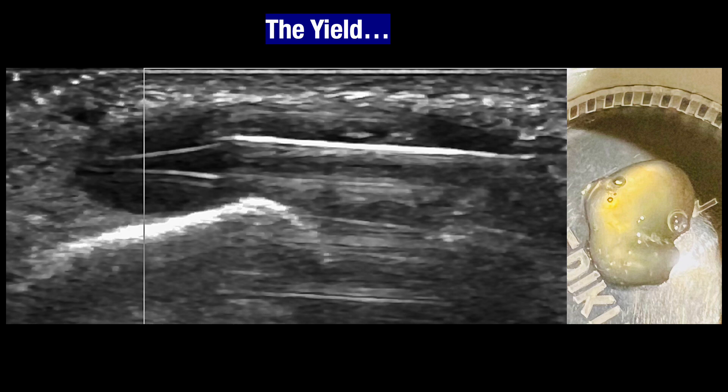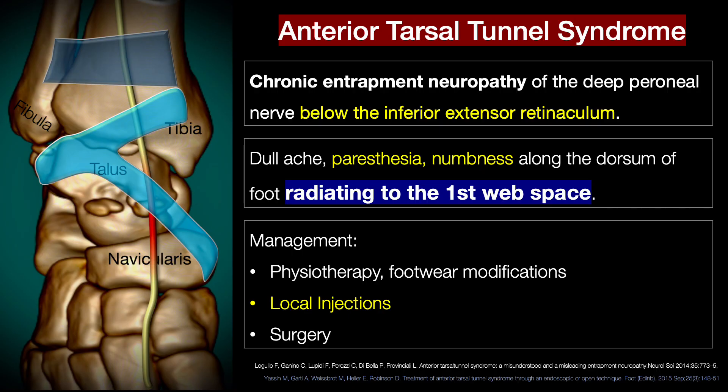At the end of the procedure, we aspirated around 0.6 ml of viscous gelatinous material, which represented the ganglion. The classic anterior tarsal tunnel syndrome is basically chronic entrapment neuropathy of the deep peroneal nerve below the inferior extensor retinaculum.